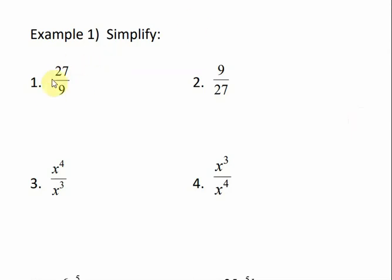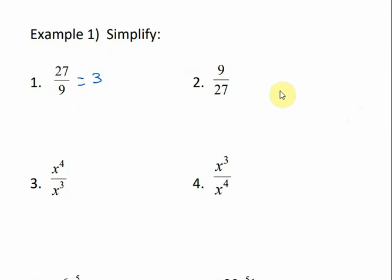When we have just coefficients, if the larger number is on top, then we can divide — 27 divided by 9 gives us 3. However, if the larger number is on the bottom, we're never going to have a whole number for our answer. This can only be reduced, so this would reduce to one-third.